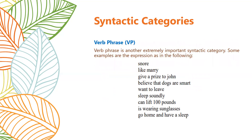Verb phrase is another extremely important syntactic category. A verb phrase will certainly contain a verb. Examples include: 'snore' (a single verb), 'give a prize to John' (starts with the verb 'give'), 'believe that dogs are smart,' 'want to leave,' 'sleep soundly,' 'can lift 100 pounds,' 'is wearing sunglasses,' and 'go home and have a sleep.'